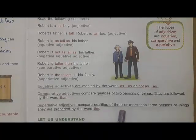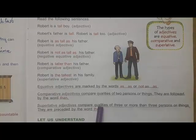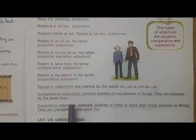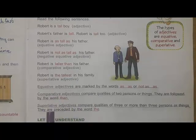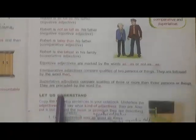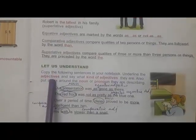In superlative adjectives we make a comparison between three or more than three persons. So we have three kinds — or degrees — of adjectives: equative adjectives, comparative adjectives, and superlative adjectives. Now let's move to the bottom.